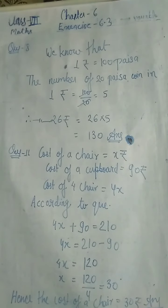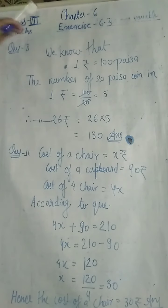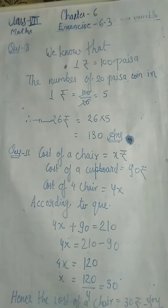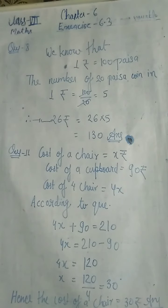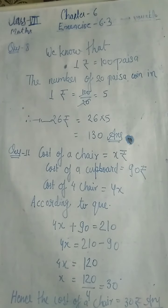Hello everyone, I am Monica. Today I will start Class 7th Mathematics Chapter 6, Exercise 6.3. I have already discussed questions 1 to 7. This is question number 8. The question says: there are only 20 paise coins in a purse. If the total value of money in the purse is 26 rupees, find the number of coins in it.